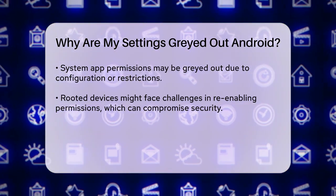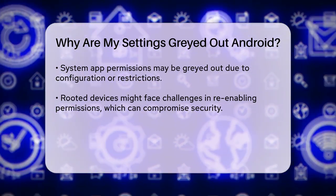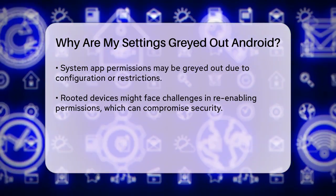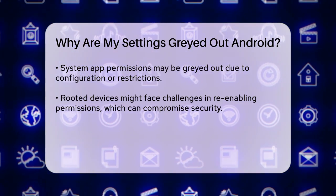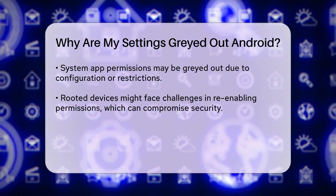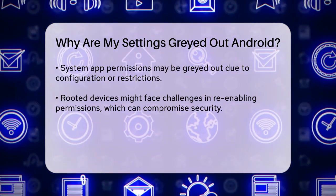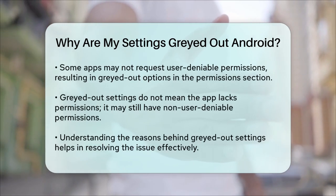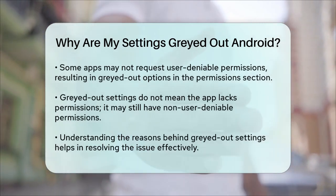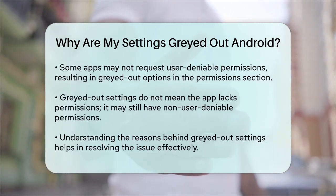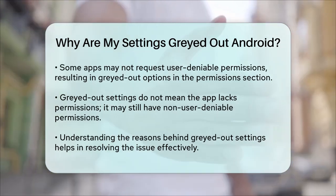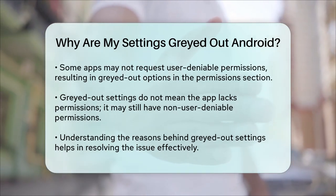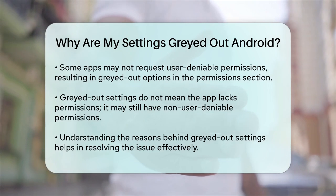In some cases, the permissions section in the app info screen might be grayed out if the app does not request any user-deniable permissions. This is a design choice to indicate that the app does not require permissions that you can control. However, this does not mean the app has no permissions at all — it might still have other permissions like internet access that are not user-deniable.